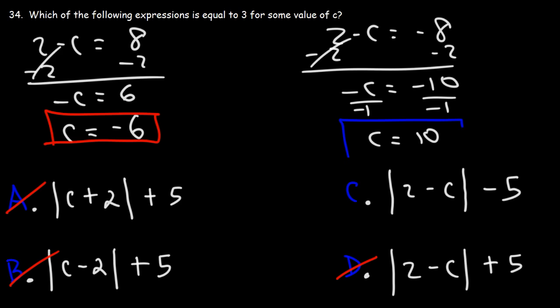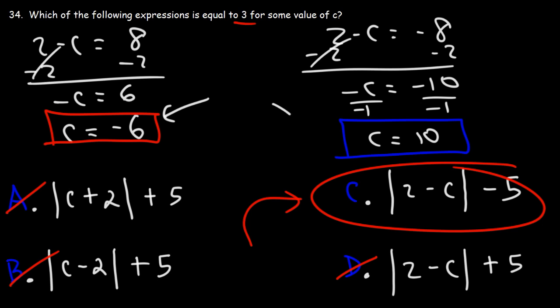Those are the two solutions of c. So therefore, answer choice C is the correct answer. There is some value of c that will give us 3, and those values are negative 6 and 10.